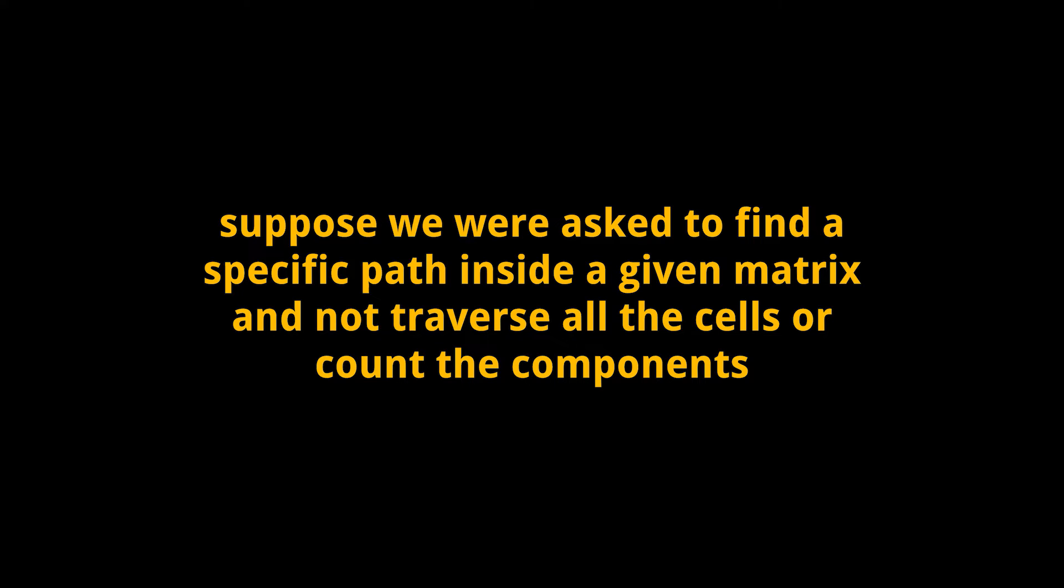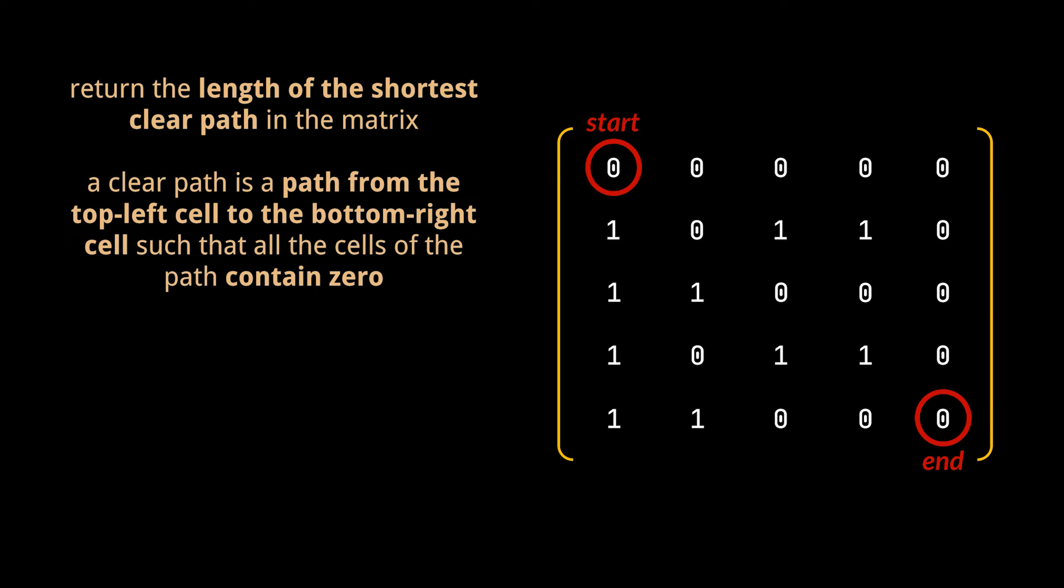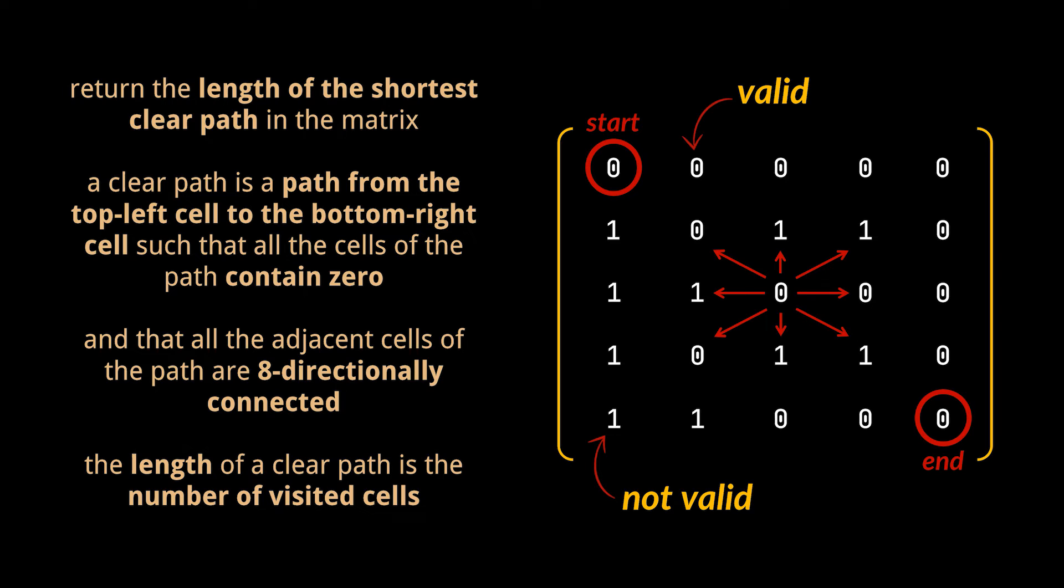To visualize this, say you are given an n times n binary matrix containing ones and zeros only, and you are asked to return the length of the shortest clear path in the matrix. Note that a clear path is defined here as a path from the top left cell (the 0,0 cell) to the bottom right cell (the n minus 1, n minus 1 cell) such that all the visited cells of the path contain zero and that all the adjacent cells of the path are eight directionally connected. The length of a clear path is the number of visited cells on this path.